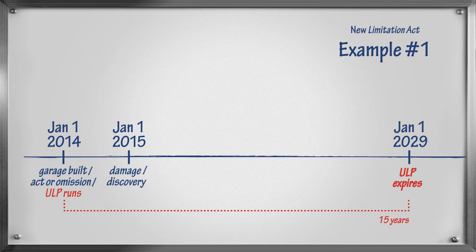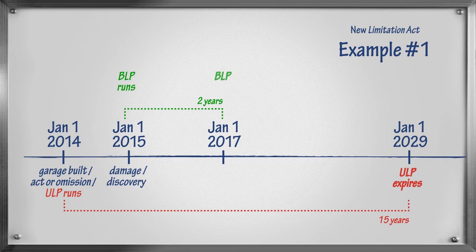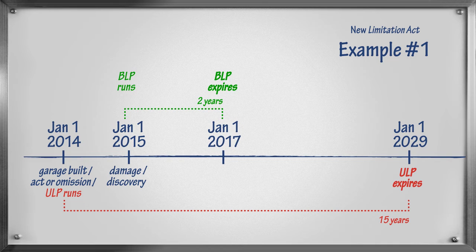The Basic Limitation Period begins upon discovery. In this example, discovery occurred on January 1, 2015, the date that Mary noticed the garage wall beginning to sink. The 2-year Basic Limitation Period begins on January 1, 2015 and expires on January 1, 2017. This means that Mary has until January 1, 2017 to begin her legal claim against the contractor.